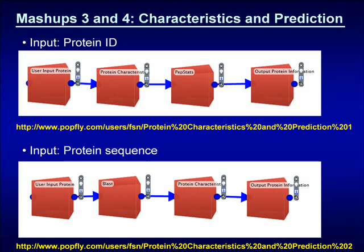The blocks have been designed so that a single mashup is able to both retrieve protein characteristics and perform protein prediction. This is achieved by blocks which can be supplied with a protein ID and output a protein sequence, and vice versa. In the first mashup shown, a protein ID is provided as input; an operation in the protein characteristics block retrieves the relevant sequence, which is then passed to subsequent processing blocks for protein prediction. In the second mashup, a protein sequence is provided; the relevant protein ID is retrieved using the BLAST block and can then be used in protein characteristics processing blocks.